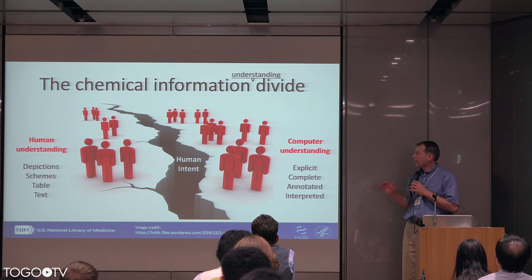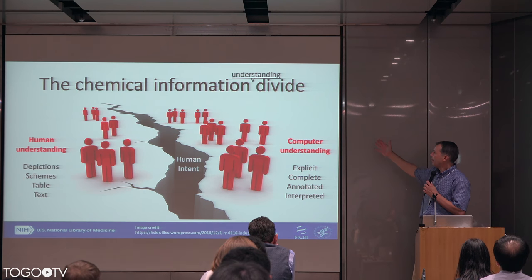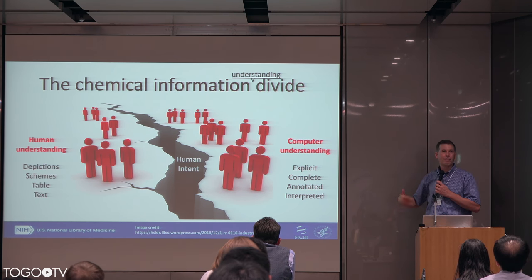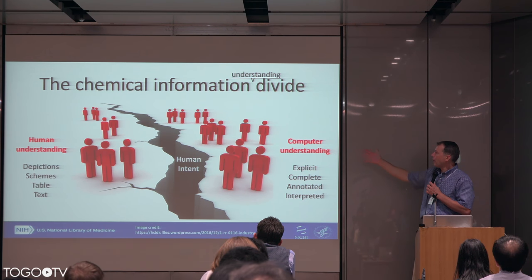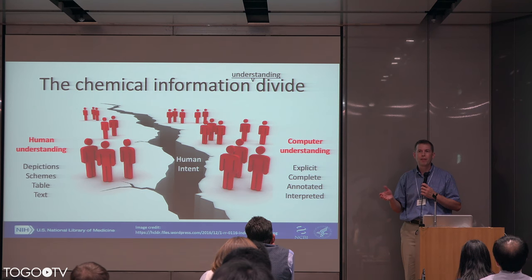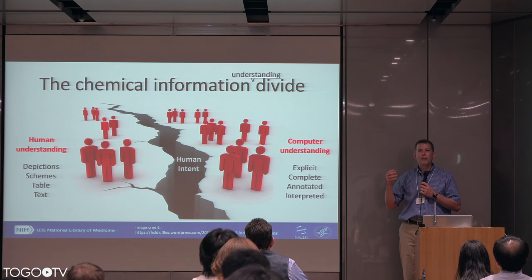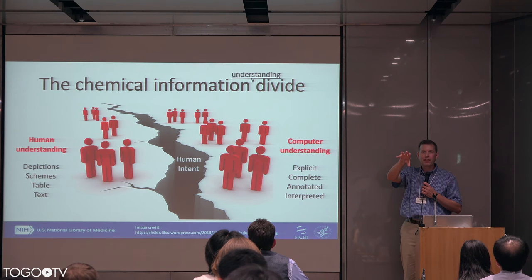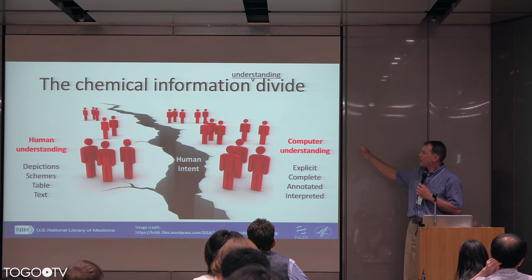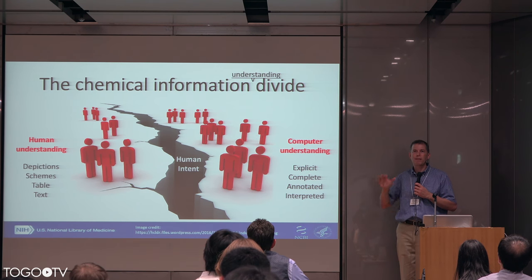Another vexing problem for an aggregator like PubChem is that we have information on one side geared towards human understanding, and on the other side the computer understanding — which I would say is the RDF-expressed content. In between is a gap: human intent, which is missing. If you're trying to work with information content within a publication, you can use computer algorithms to pull out that content, but you may miss a lot of implicit data that humans understand. A human could recognize and stitch together a depiction, text, and table information by eye very quickly, but the computer has disparate pieces it doesn't know how to join.